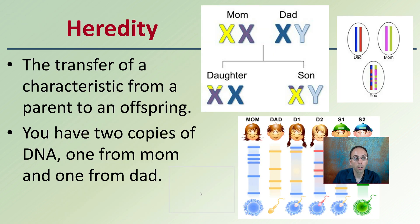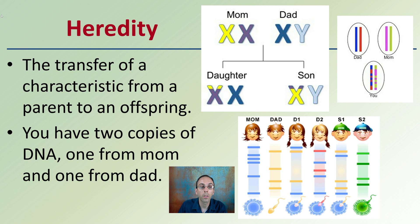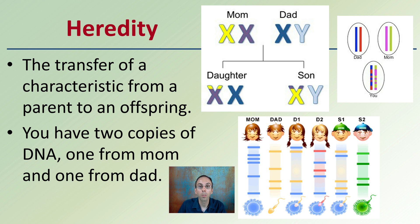Starting off with heredity: heredity is the transfer of characteristics from parent to offspring. You have two copies of DNA — one from mom, one from dad — and you're a mixture of the two. You might get some traits more from mom or more from dad, but you're inheriting those traits. Other than your mitochondria, which all comes from your mom, so you may inherit just a little bit more from the maternal side than the paternal side.